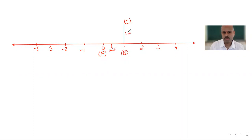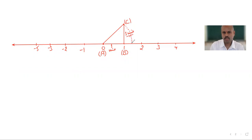This perpendicular distance is also 1 unit. After this we join point A and point C, and then with the help of a compass, taking A as center and radius equal to AC, we draw an arc. The point where the arc meets the number line represents √2, and we name this point D.